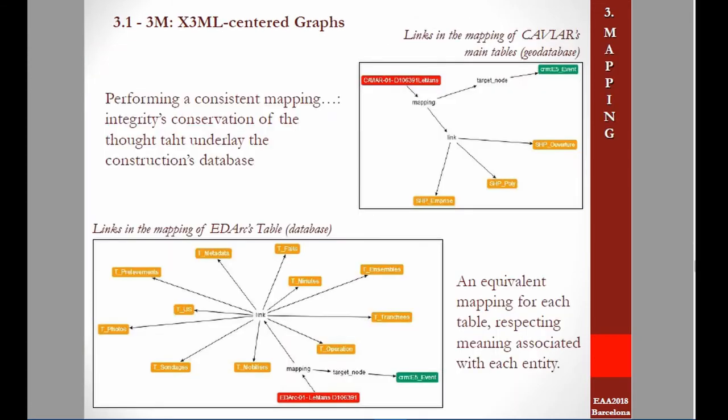In 3M, a link can be made to the MAZE application, which allows us to visualize the analysis of the mapping and to obtain graphs. Here we can observe graphs from the mapping of the EDARC database and the 3M shapefiles from CAVIA. For each of the tables, we respect the association with the input entities associated with each table explained previously, and also between different over-mappings in order to respect the meaning associated with each entity.